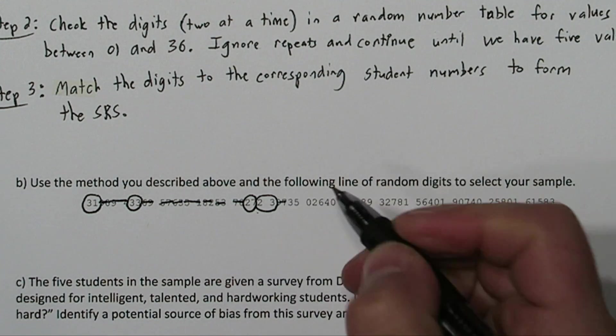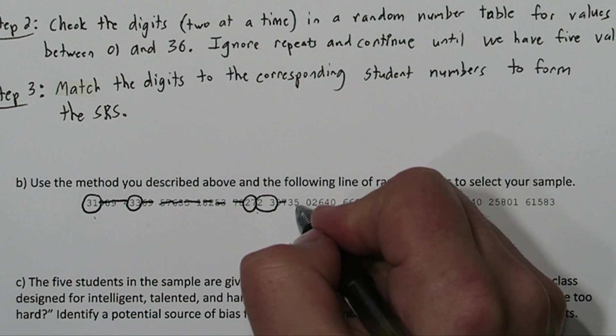97 doesn't work. We have 1, 2, 3, 4. We need one more. Here it is, 35.